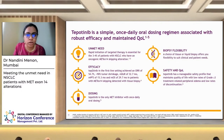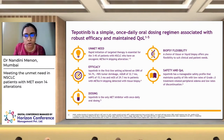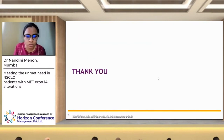To summarize: tepotinib is a simple oral once-daily regimen for patients with MET exon 14 skip mutation-positive non-small cell lung cancer. In the first-line setting, it achieves an objective response rate of more than 50%, with 90% tumor shrinkage and a very long duration of response of nearly three years. Flexible testing criteria allow both liquid and tissue biopsy. Toxicities are manageable with dose reduction, with low rates of grade 3 or higher events leading to discontinuation. Quality of life did not deteriorate and was stabilized after a few months of therapy, including in patients over 75 years.